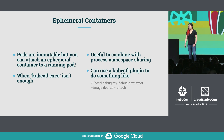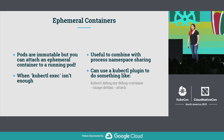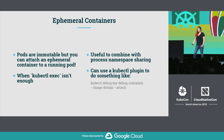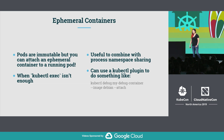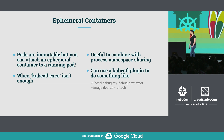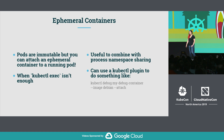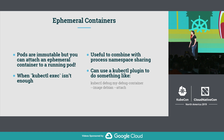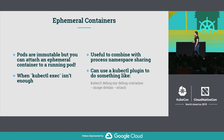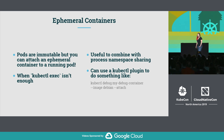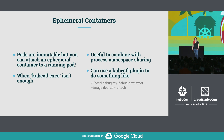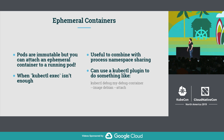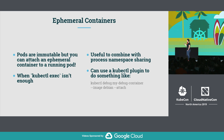Or maybe you want to inspect the file system of your target container. This is even more useful if you combine it with turning on the process namespace sharing. This feature is in alpha, so you have to turn it on when you run 1.16. Once you do, you can install kubectl plugins such as kubectl debug to start attaching a debug container to your pod, like this example.